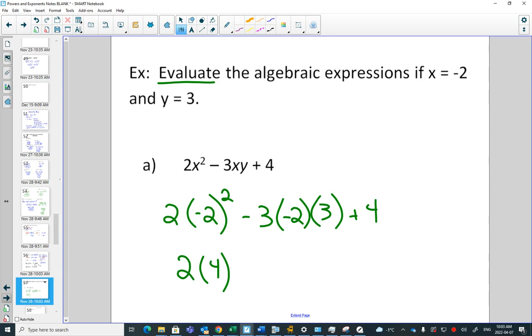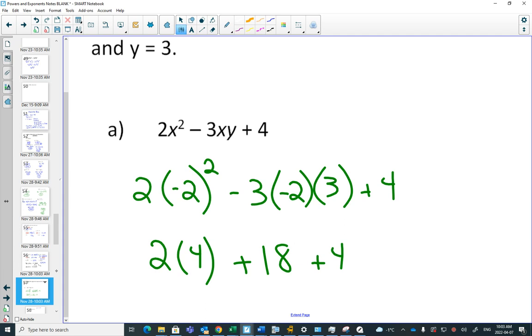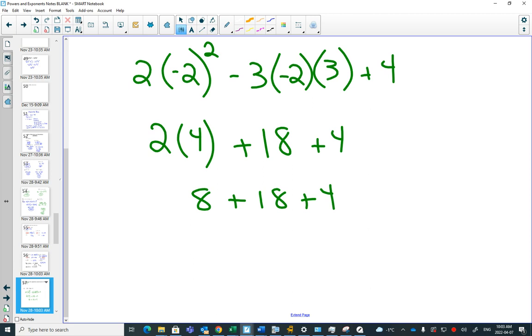We can do these two first. That'll be 6, and then times 3 will be 18. And does it make sense that it will be positive? And then I still have a positive 4. We've got order of operation. We've got an 8 plus 18 plus 4. And then that is equal to 30.